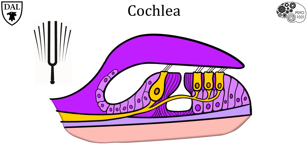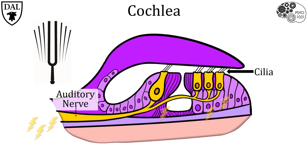Remember, the basilar and tectoral membranes are connected by the hair cell cilia. Thus, as the basilar membrane moves up and down, it causes bending of the hair cell cilia. When the cilia bend, mechanosensitive channels open, inducing electrochemical signals in the hair cells, allowing for neurotransmitter release onto auditory sensory cells, which then signal via the auditory nerve to the brain.